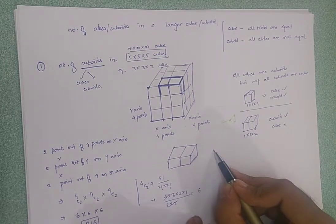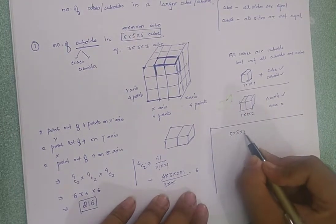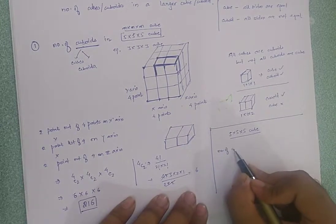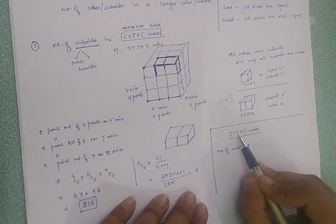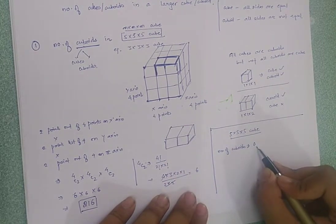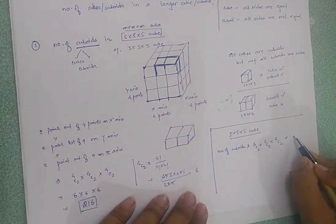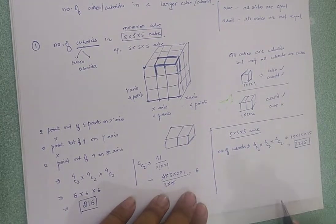Now let's take the 5×5×5 cube and find the number of cuboids. A dimension of 5 means we have 6 points on that axis. So we need to choose 2 points out of 6 for each of the three axes: 6C2 × 6C2 × 6C2. Solving this gives 15 × 15 × 15, which yields a result of 3375. So the total number of cuboids is 3375.